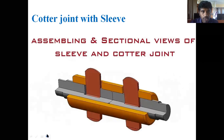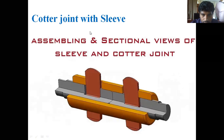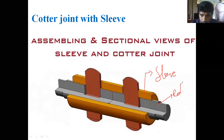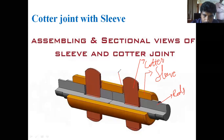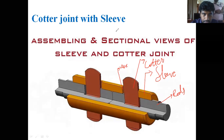The first type is the cotter joint with sleeves. In the figure, we have shown the assembly and sectional views of the sleeve and cotter joint. Here we have a sleeve, and we have two rods. They are joined with the help of two cotters. You can also see a small gap between the cotter and the sleeve, which is called the clearance.